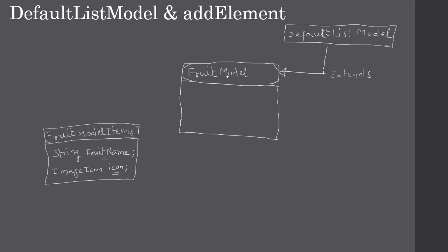Next we create another class called FruitModel. This FruitModel extends from the Java API's DefaultListModel. The DefaultListModel contains a useful method called addElement. Using this DefaultListModel we can supply data at runtime. With addElement we will create instances of FruitModelItems and add them to the model. If we have seven list items, we use FruitModel's addElement to add those seven items, and each item will hold a fruit name as well as an icon.